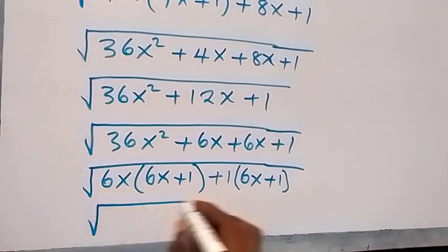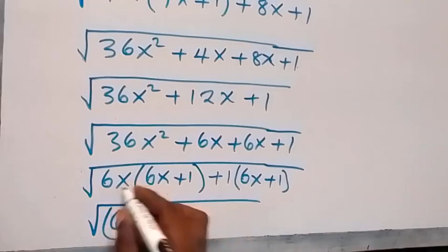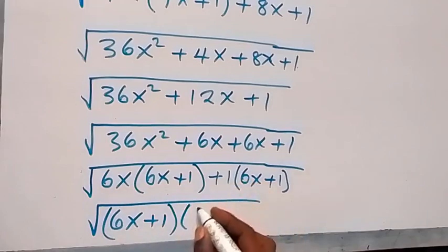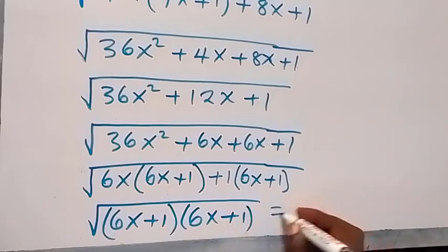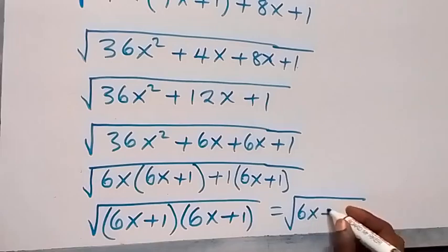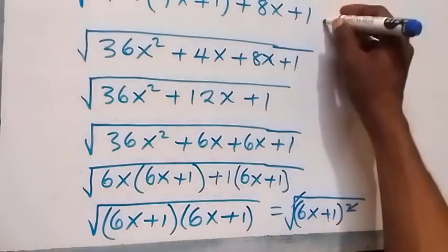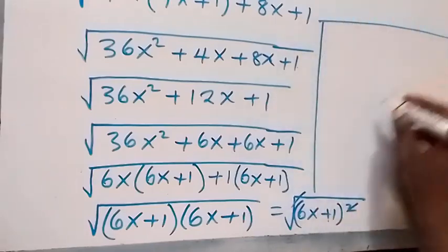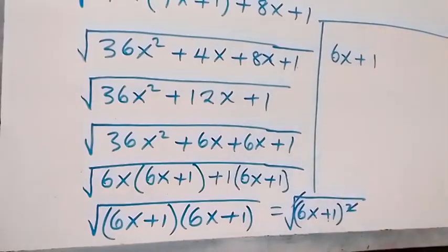We have (6x plus 1) common, so when we take that out this becomes square root of (6x plus 1) times (6x plus 1), which we can write as square root of (6x plus 1)². The square cancels the square root, and this remains simply 6x plus 1.